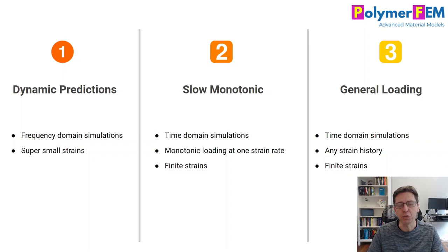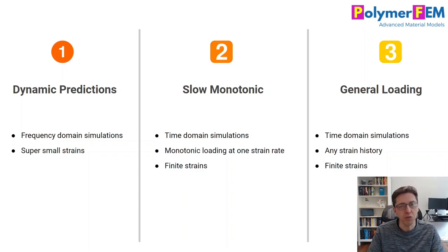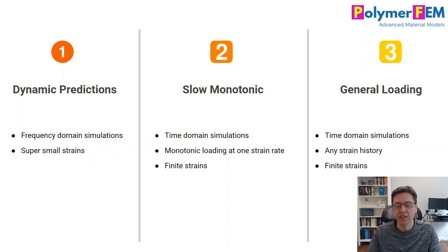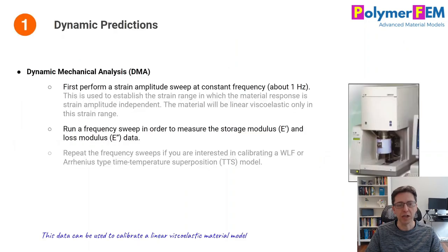I divide it up into three groups. If you're interested in dynamic predictions, there are frequency domain simulations using a finite element solver, and you're interested in small strains — 1% or smaller typically. The second group is slow monotonic loading, where you want to do a time domain analysis quickly. And finally, the general loading case where you want to be really accurate, doing time domain analysis with large strains and arbitrary strain histories.